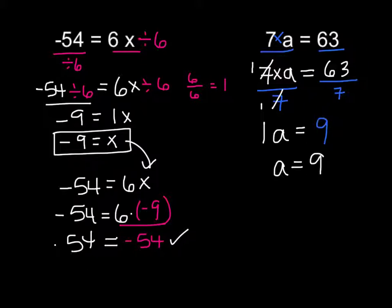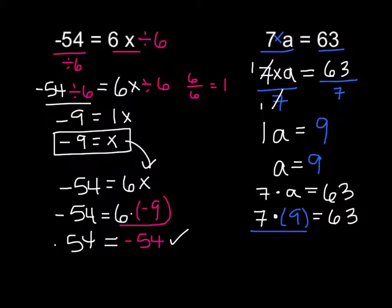Is equal to 9. So now let's check our work. We can say 7 times a, our original equation, is equal to 63. Now, we can also rewrite that times sign so it doesn't look like an x, so it doesn't look like a variable. And we can rewrite it as a little dot. And so, this time we're going to say 7 times 9 is equal to 63. 7 times 9, I do that math and I get 63 is equal to 63. Check. We got it.